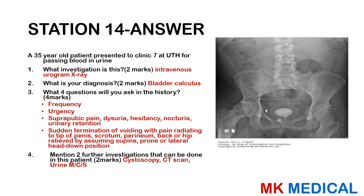This is most likely an intravenous urogram (IVU) x-ray showing a filling defect where the bladder is, suggesting a bladder stone or bladder calculi. History questions include: frequency, urgency, sudden termination of voiding associated with pain radiating to the tip of the penis, scrotum, perineum, back, or hip — relieved by supine, prone, or lateral head-down positions — as well as suprapubic pain, dysuria, hesitancy, nocturia, or urinary retention. Further investigations include cystoscopy, CT scan, urine microscopy culture and sensitivity, and urinalysis.